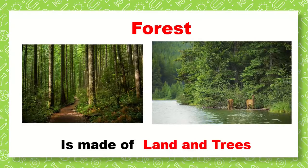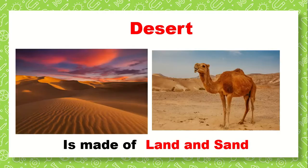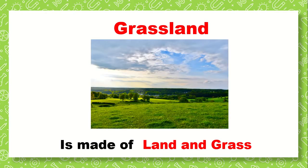Next is forest. Forest is made up of land and trees — a forest has many trees. Next is a desert. A desert is made up of land and sand only; there aren't any trees or water in a desert. Next is a grassland. Grassland is made up of land and grass. There are a few trees but mostly grass.